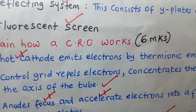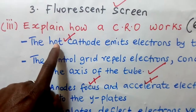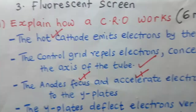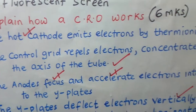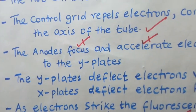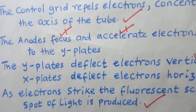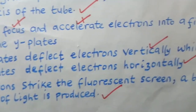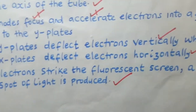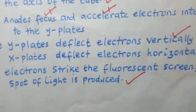Explain how a CRO works — six marks. We start from the heater: the heater heats the cathode, so the cathode becomes hot. The hot cathode emits electrons by thermionic emission. Then the electrons go to the grid — the control grid repels electrons and concentrates them along the axis of the tube. Then they go to the anodes: the anodes focus and accelerate electrons into a fine beam to the Y plates. The Y plates deflect electrons vertically, while the X plates deflect electrons horizontally. Then the electrons go to the screen — as electrons strike the fluorescent screen, a bright spot of light is produced.